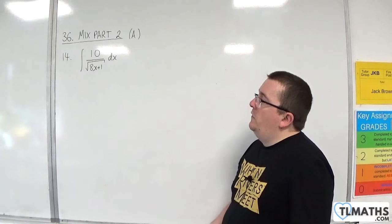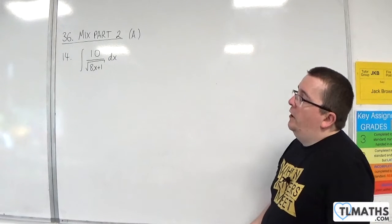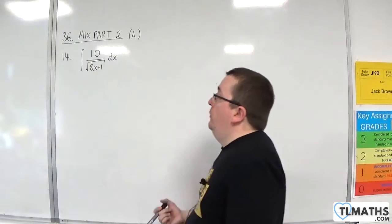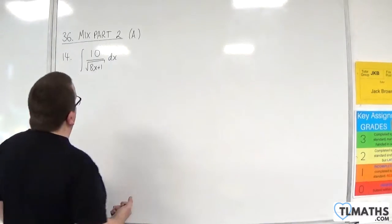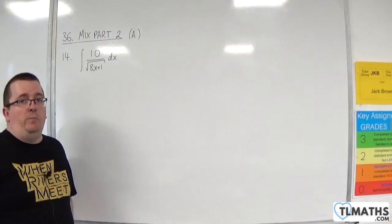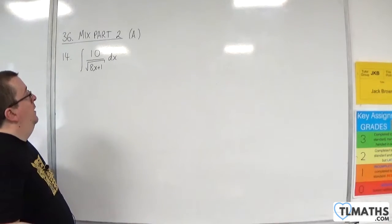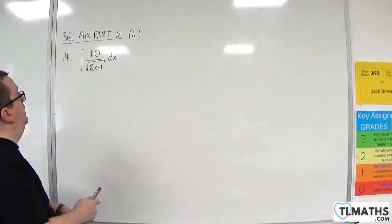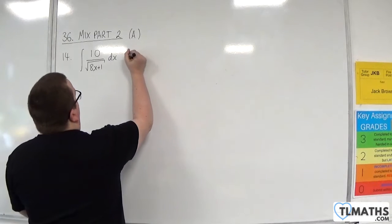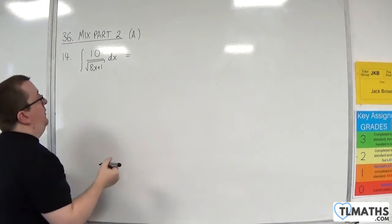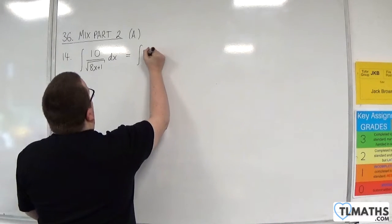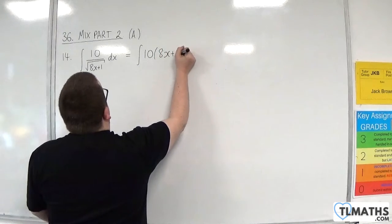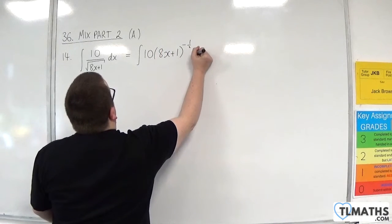This is number 14. We've got the integral of 10 over the square root of 8x plus 1. You could do this by integration by substitution if you wanted to, letting u be 8x plus 1, or you can reverse the chain rule. I'll do the reversing chain rule first. In either case, you may find it easier to rewrite this as 10 times (8x + 1) to the minus one half dx.